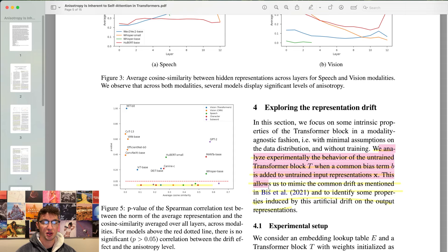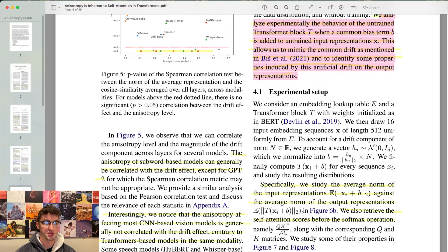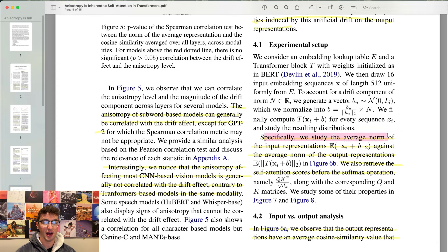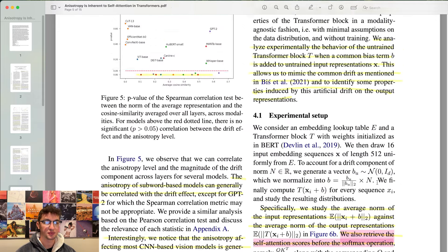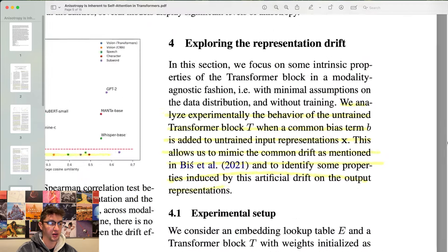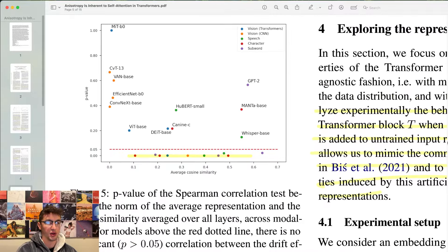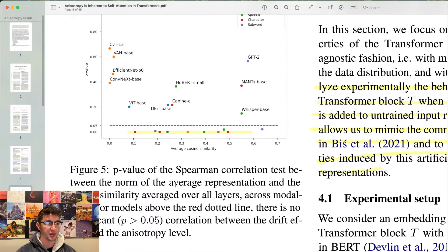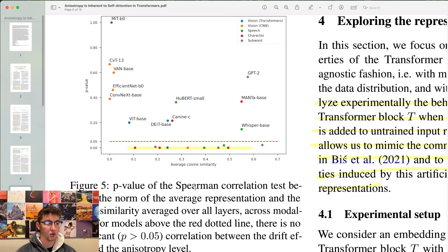We analyze experimentally the behavior of the untrained transformer block when a common bias term is added to untrained input representations. This allows us to mimic the common drift and to identify some properties induced by this artificial drift on the output representations. Specifically, we study the average norm of the input representations against the average norm of the output representations. We also retrieve the self-attention scores before the softmax operation.